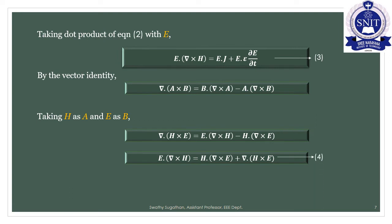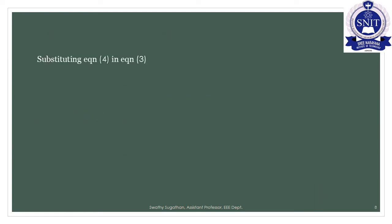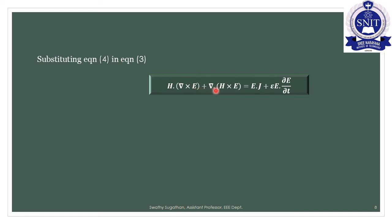Substituting equation number 4 into equation number 3 gives equation number 5: H · (del cross E) + del · (H cross E) = E · J + ε · E · ∂E/∂t.